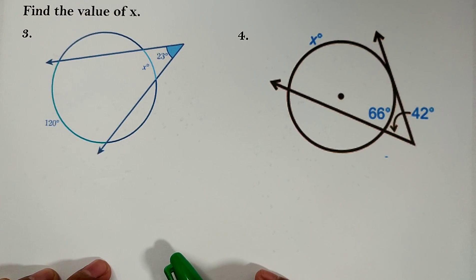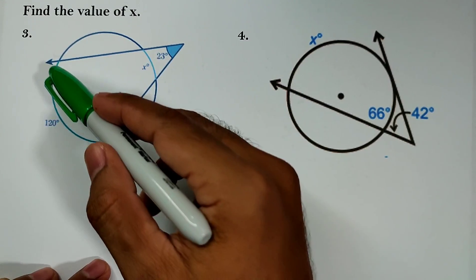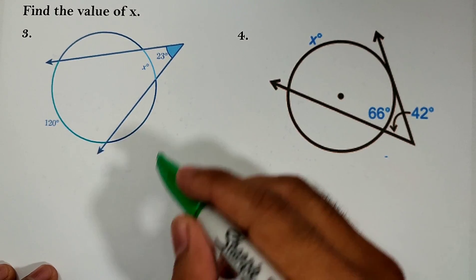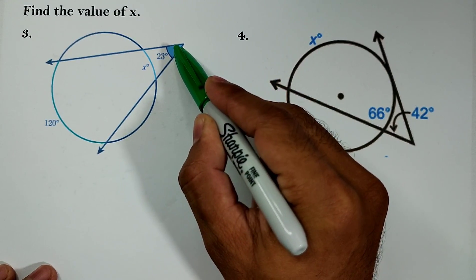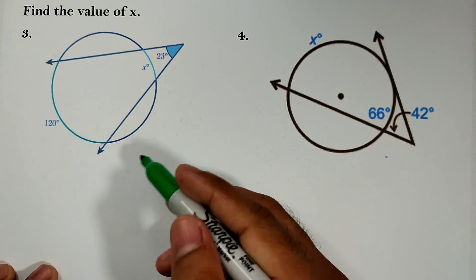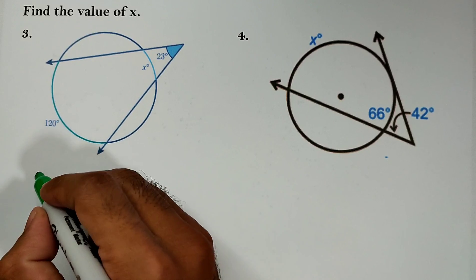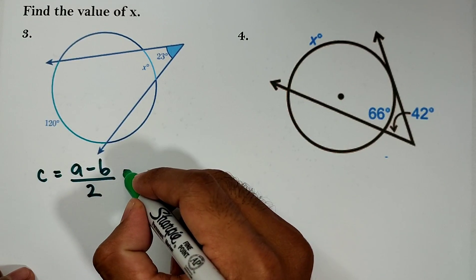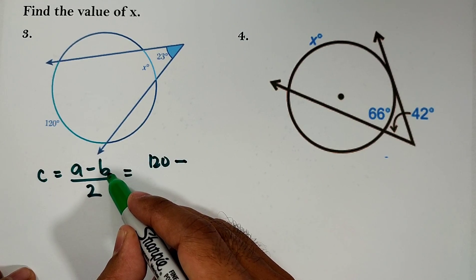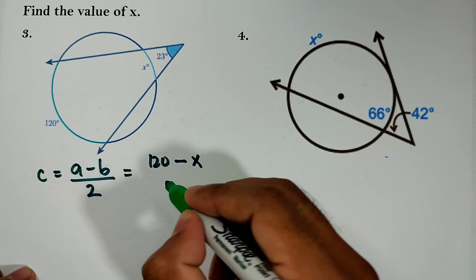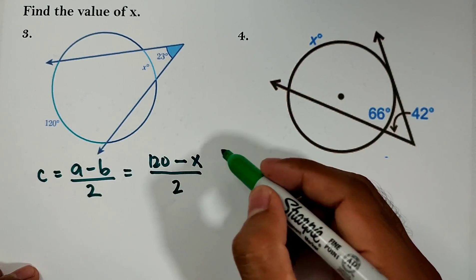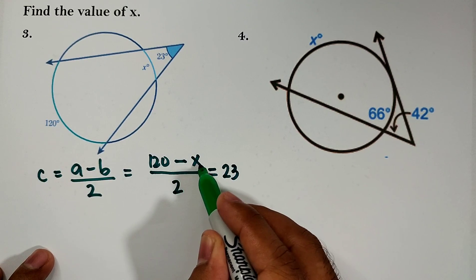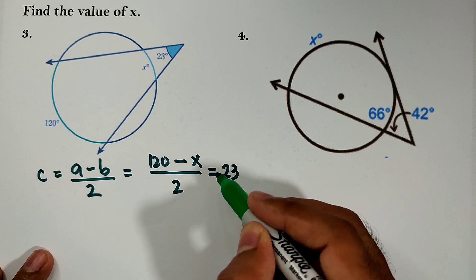Let's look at another example. What if the given values are the measure of an angle and one intercepted arc? Based on the theorem, the angle formed outside of the circle equals half the difference of the intercepted arcs. The value of A is 120 degrees. So the formula gives: 120 − X, all over 2, equals 23 degrees. Then cross-multiply.